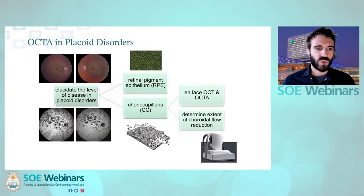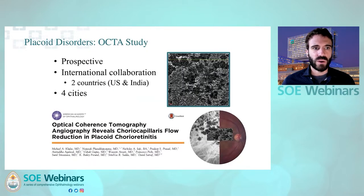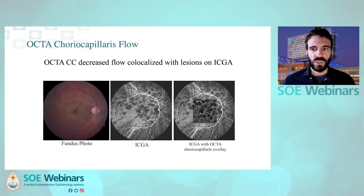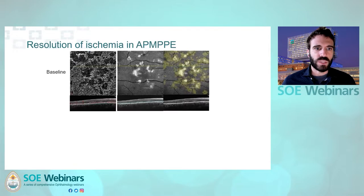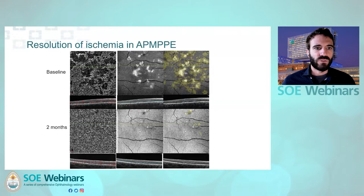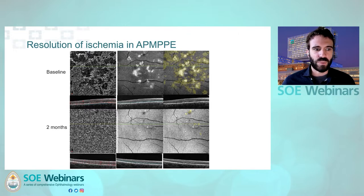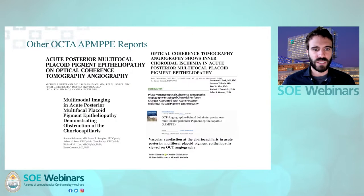The chorocapillaris ischemia seen on ICGA corresponds perfectly to the loss of flow on OCTA at the chorocapillaris level. Different groups have studied the correspondence between ICGA and OCTA findings in APMPPE. We collected placoid lesion cases and compared ICG to OCTA — the ICG hypofluorescent lesion of APMPPE corresponds perfectly to the OCTA loss of flow at the chorocapillaris level. This resolves very well with treatment. On the left side of the screen, the flow void at baseline disappears completely at two months, and the RPE alteration above those areas of chorocapillaris ischemia also disappears at two months.